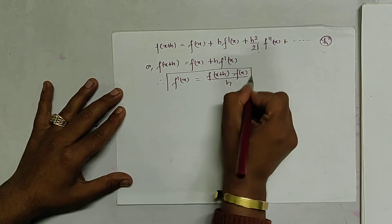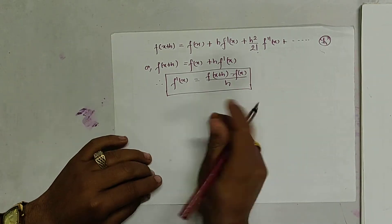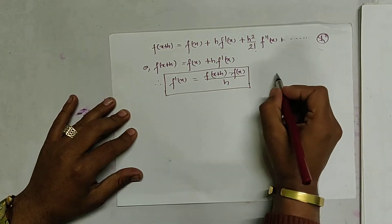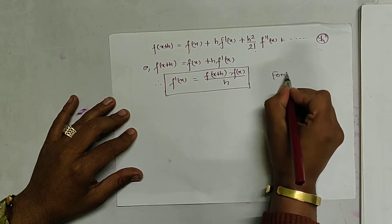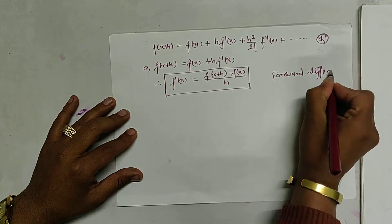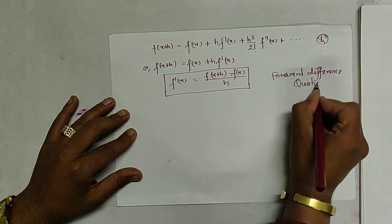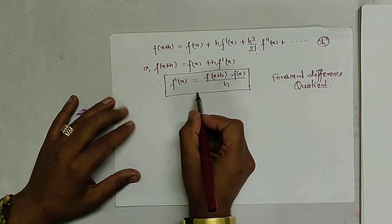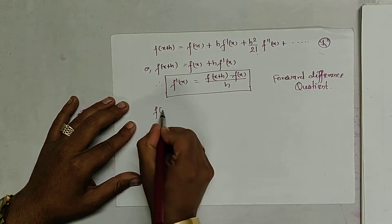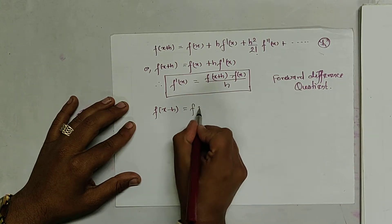From this we can write f'(x) equals [f(x+h) minus f(x)] divided by h. This is the formula to find the first derivative of the function, and it is known as the forward difference quotient.